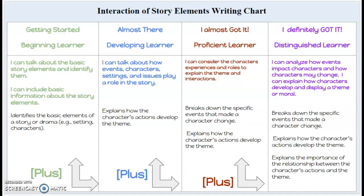Students, on this slide you see an Interaction of Story Elements Writing Chart. There are four learner levels. By the end of this activity, we would like you to be able to write at the distinguished learner level. The four levels are: getting started — beginning learner, almost there — developing learner, I almost got it — proficient learner, and I definitely got it — distinguished learner. On the following slides you'll see each level broken down with an example writing piece and how we can move from the beginning learner level to the distinguished learner level.